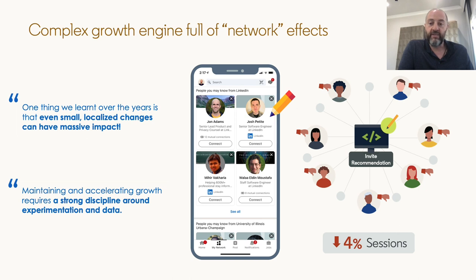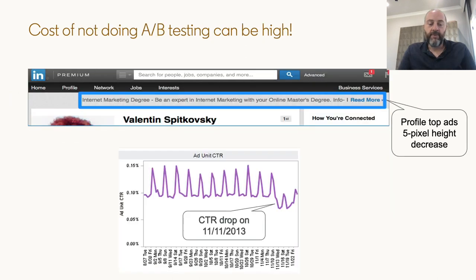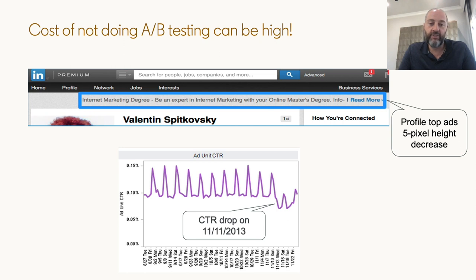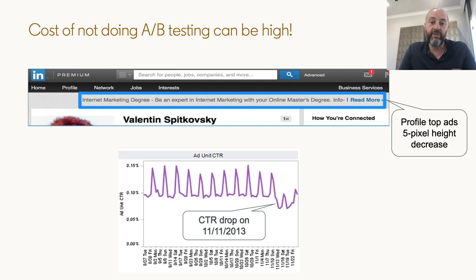So for us to maintain and accelerate our growth, it requires strong discipline around experimentation and data. Here's another example — typical not only for LinkedIn but for any online e-commerce website. We had an ad banner on the top, and the designer decided to reduce it by five pixels. You can see in the click-through rate chart that as soon as this change got deployed into production, we started seeing a small dip going down. Small cosmetic changes, if we don't do A/B testing, can have a significant impact.